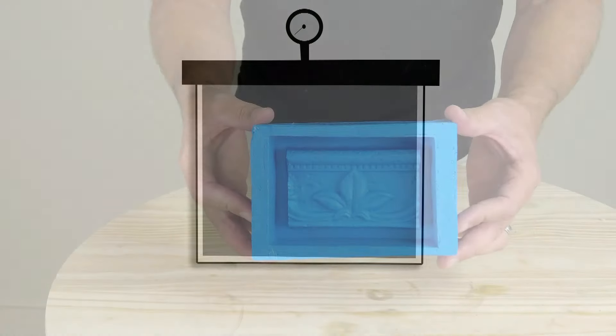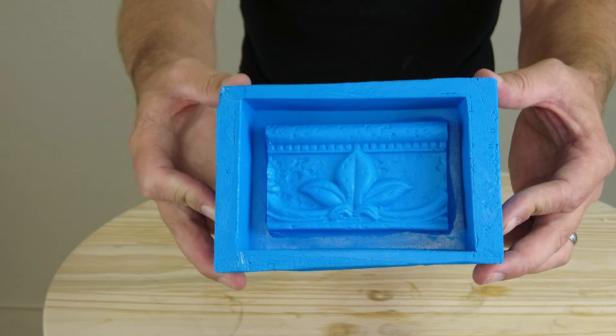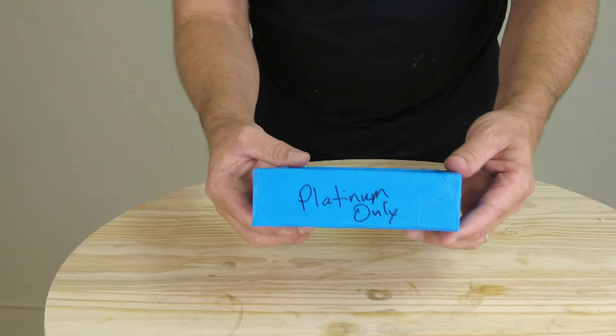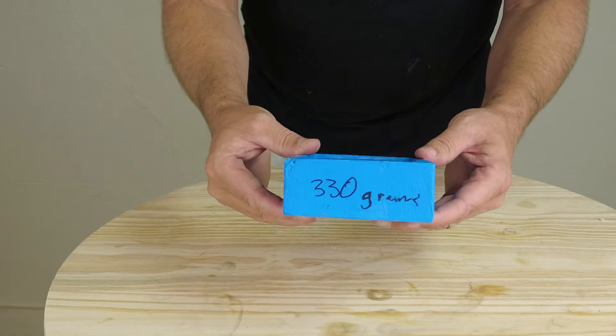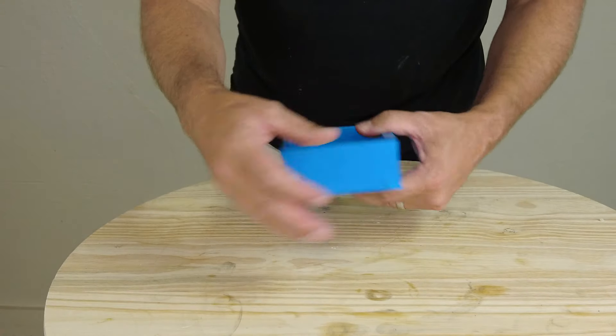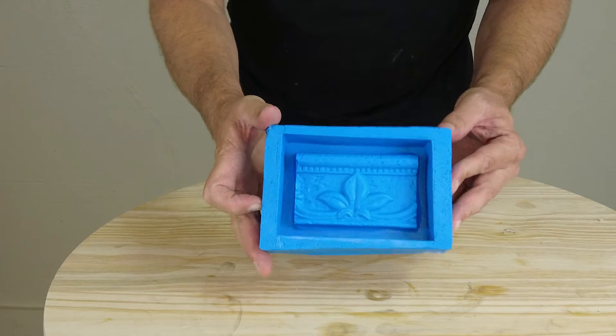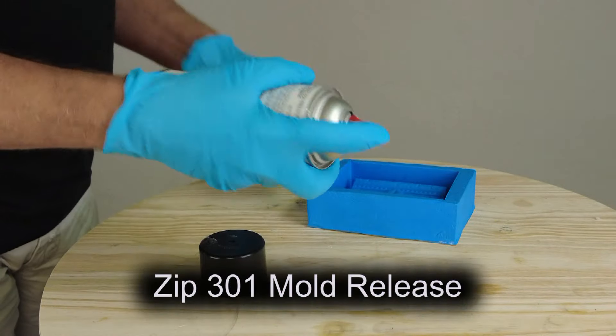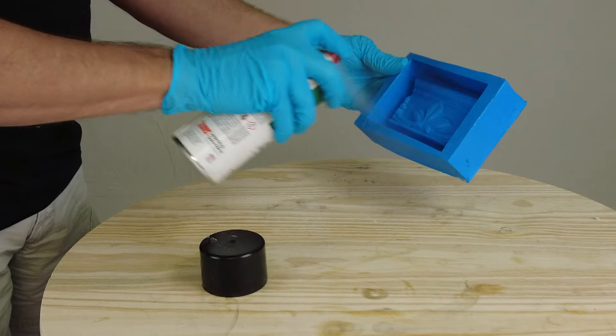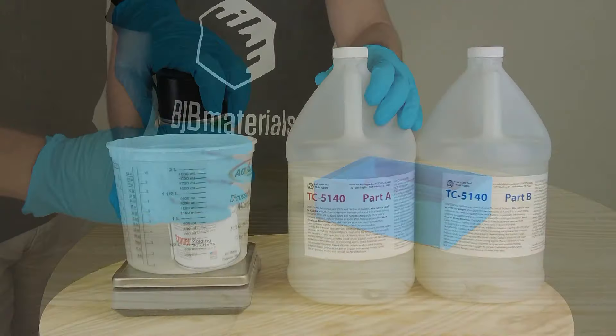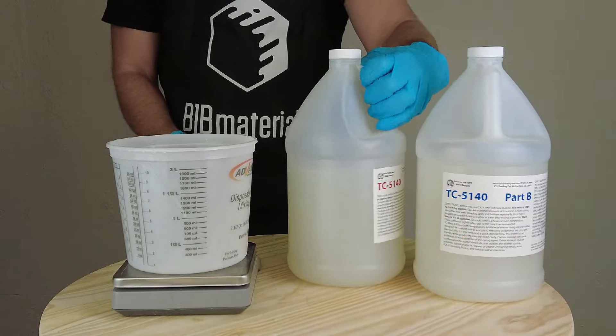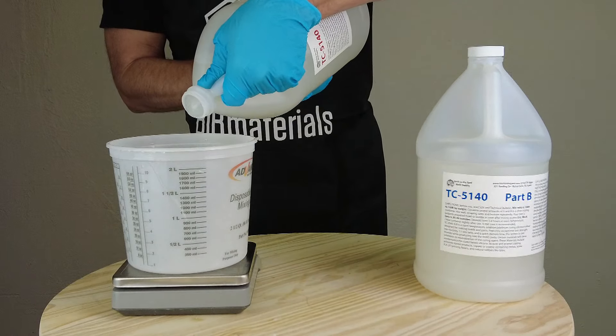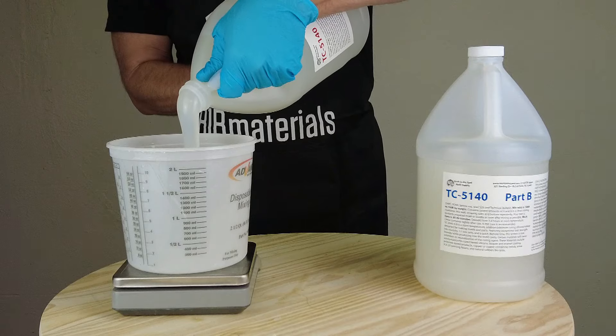Now for our mold, we're going to be pouring our silicone into a master mold. This is one I made in a previous video. And you'll notice on the side of it, I have platinum only. That means I only pour platinum silicone into this. Also, I have the amount of silicone it takes to fill it, which is 330 grams. Now this is a resin pattern or resin master mold, but I'm still going to release this with a little bit of Zip 301 mold release. So we're going to spray a little bit of that on there and set that aside to dry and now ready to mix up our silicone.